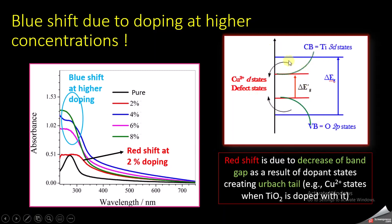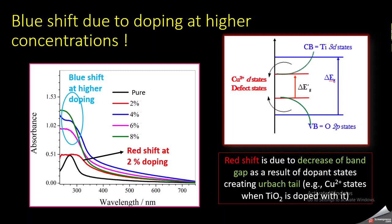In the case of titanium oxide, the conduction band is represented by the 3d states of titanium and the valence band is represented by the 2p states of oxygen. The original band gap is the difference between these two states — the conduction band and the valence band. When you dope the material, there is a reduction in the band gap because of the substates of the doped material which are created, called Urbach tails.